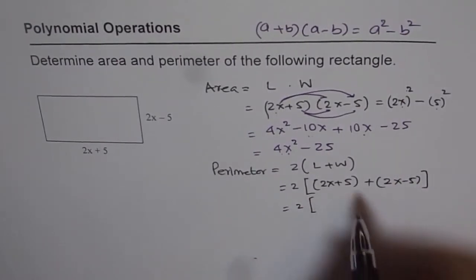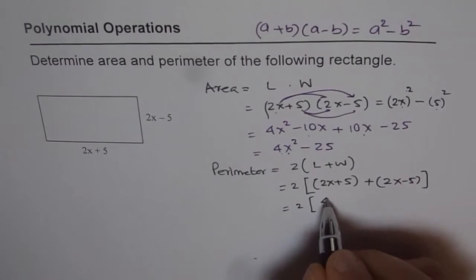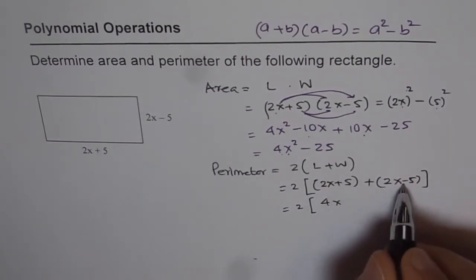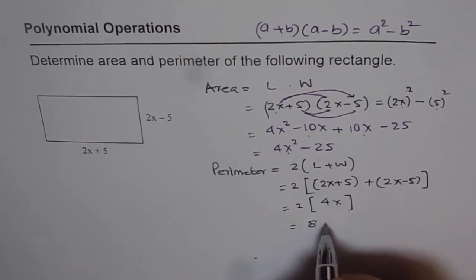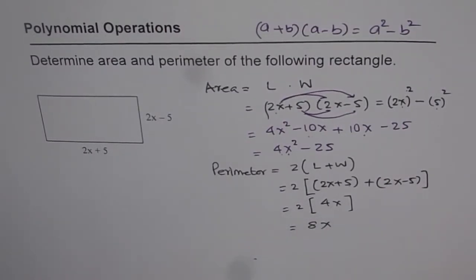Now let's add them. So 2x plus 2x is 4x, plus 5 minus 5 is 0. So we are left with 2 times 4x. That means equals to 8x. So 8x is the perimeter for this rectangle.